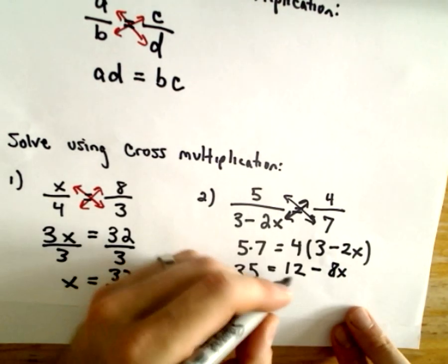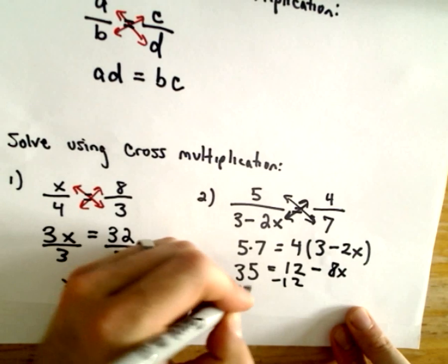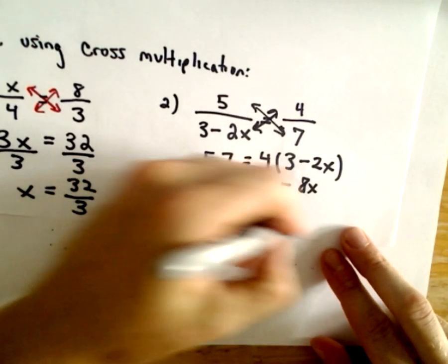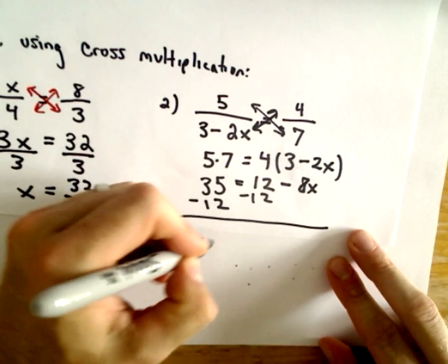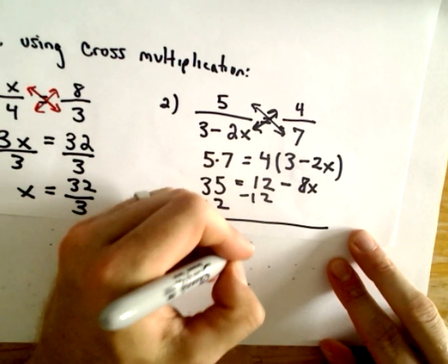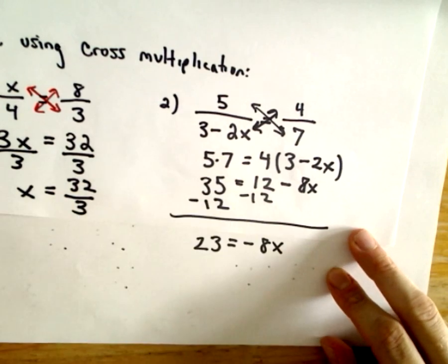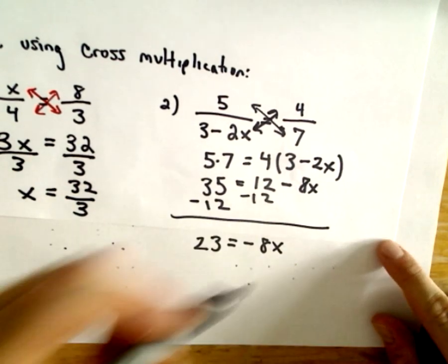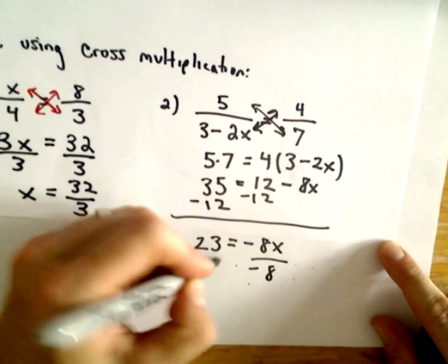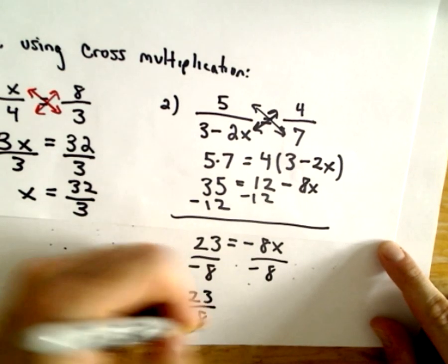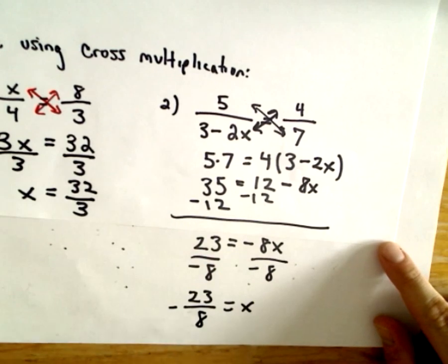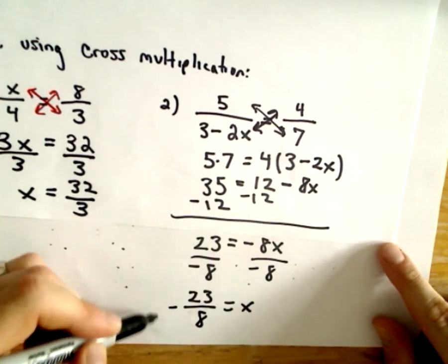We could subtract 12 from both sides. So if we subtract 12, subtract 12. That's going to give us, well, 35 minus 12, that's going to give us 23 equals, we still have the negative 8x left over on the right side. And now we can just divide both sides by negative 8. And that will give us our solution, x equals negative 23 divided by 8.